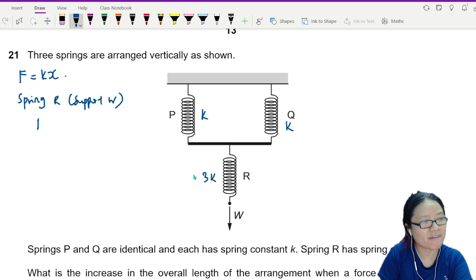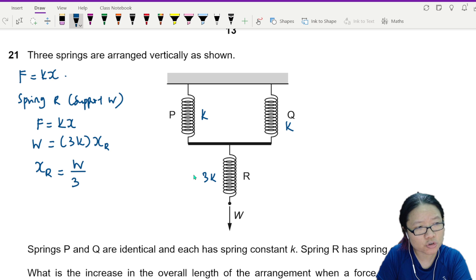Spring R on its own will support W. So I will use F is equal to KX here. What is the force? W. What is the total K? 3K. The extension of R, let's say this is XR. XR extension of spring R will be W over 3K. But this is just spring R.